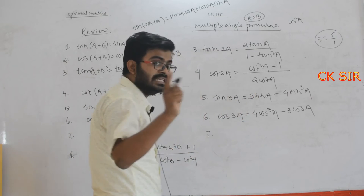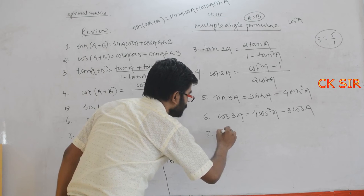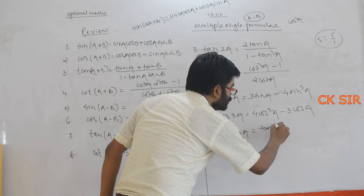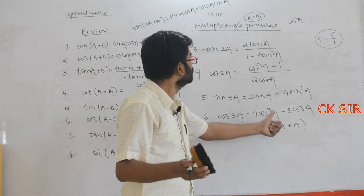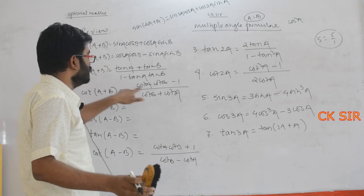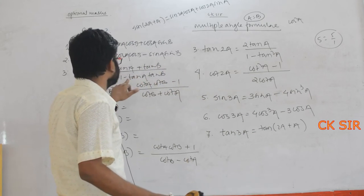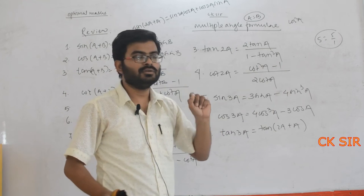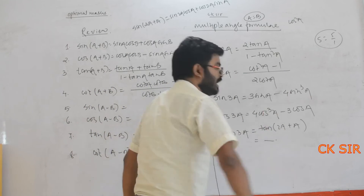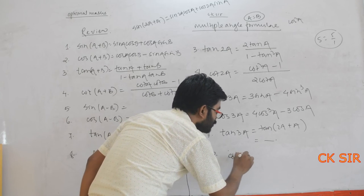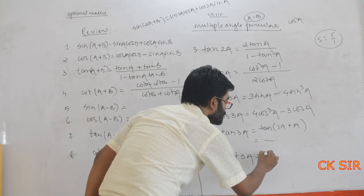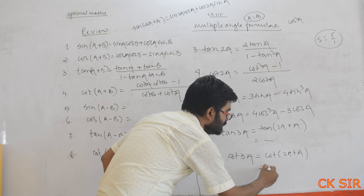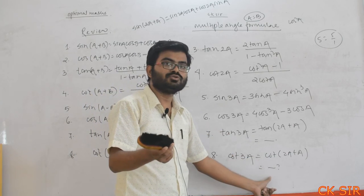For tan 3A, I will give you the hint: write it as tan(2A+A) and use the compound angle formula tan(A+B) = (tan A + tan B)/(1 − tan A·tan B). Here 2A acts as A and A acts as B, giving (tan 2A + tan A)/(1 − tan 2A·tan A). Expand everything in terms of tan and simplify — that is your homework. Similarly, for cot 3A: write cot(2A+A), use the cot addition formula, and express everything in terms of cot.